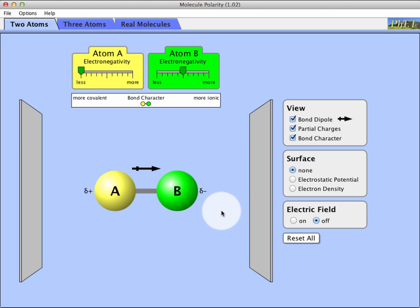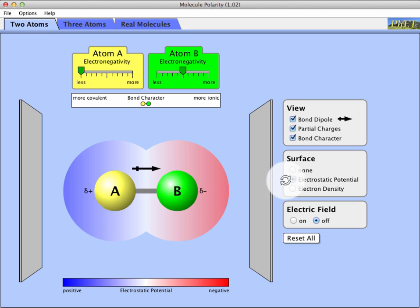Another way to visualize this is through looking at something called electrostatic potential. And if you look at this, we see that part of the molecule is more negative and another part is more positive. And that's just due to difference in electron density. In this case, atom B has a greater affinity towards pulling atom A's electrons towards its nucleus.